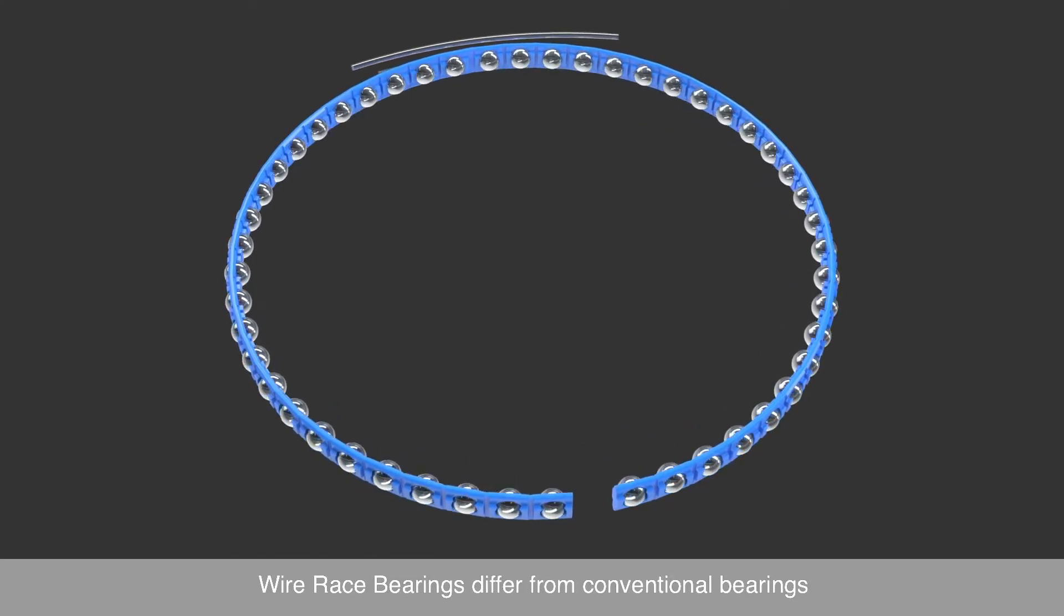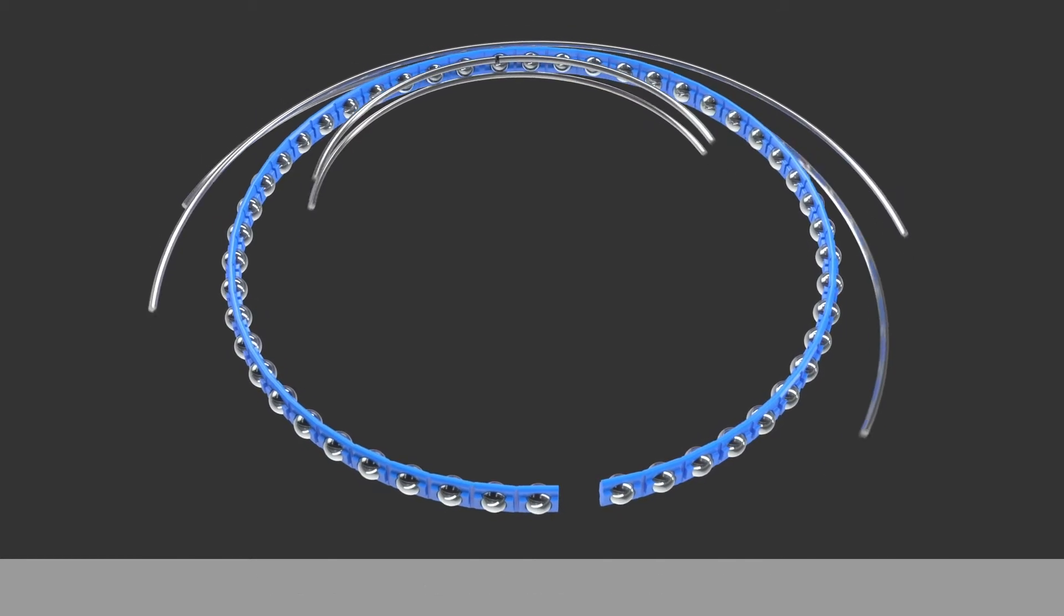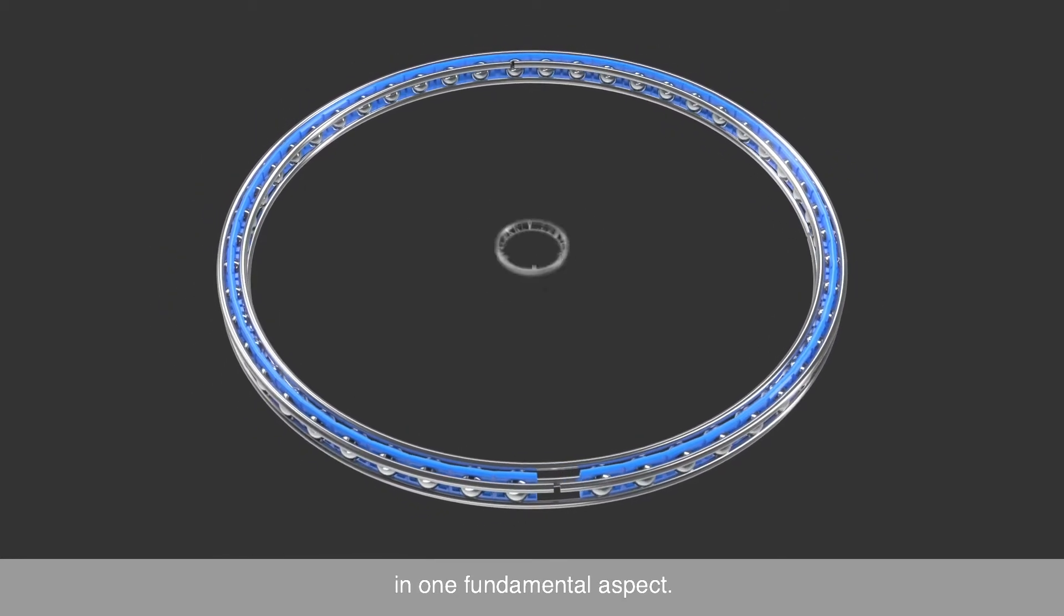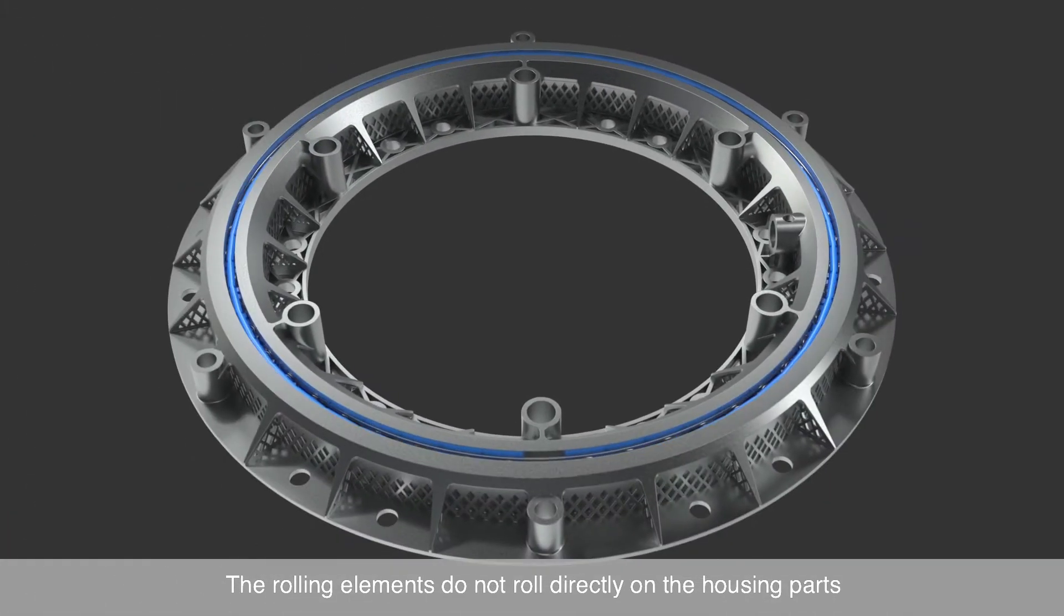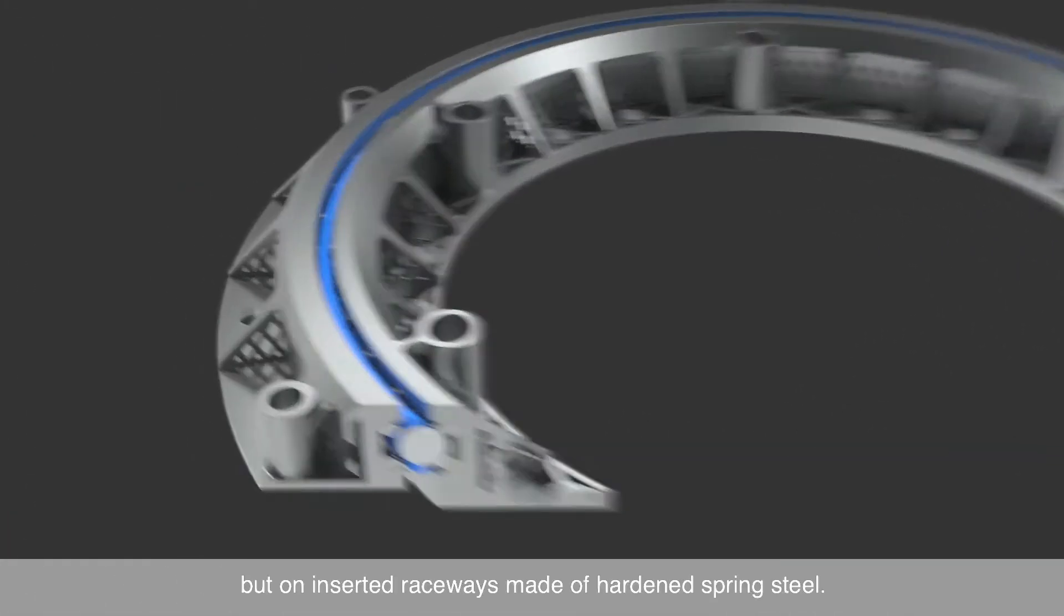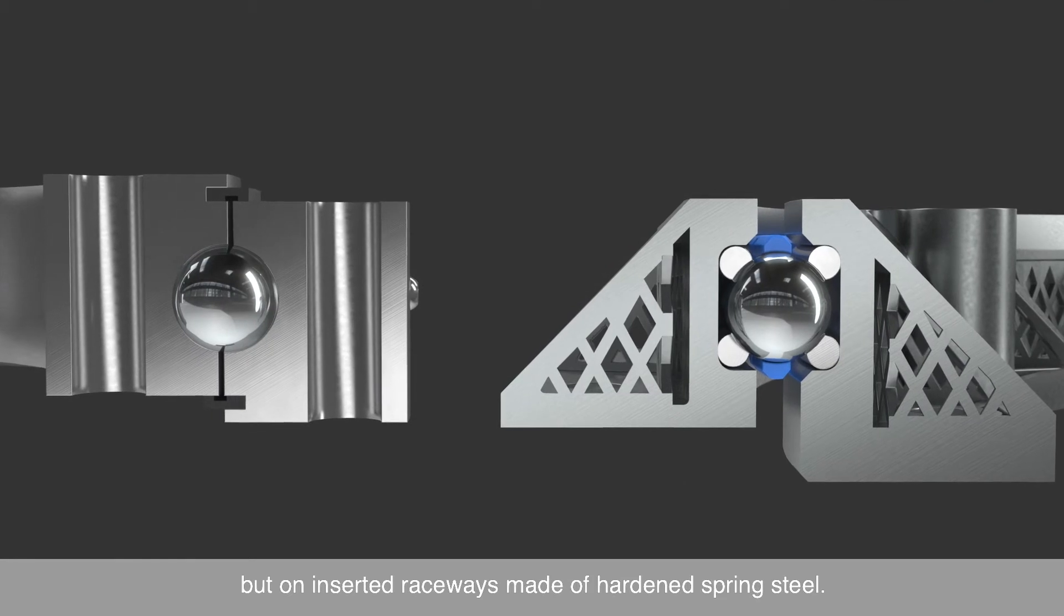Wire race bearings differ from conventional bearings in one fundamental aspect. The rolling elements do not roll directly on the housing parts, but on inserted raceways made of hardened spring steel.